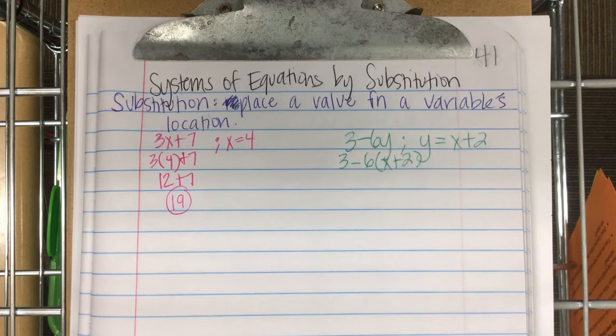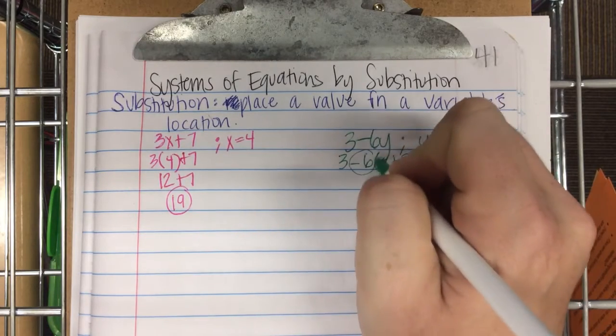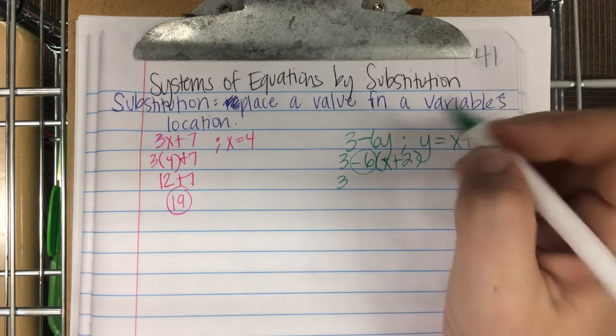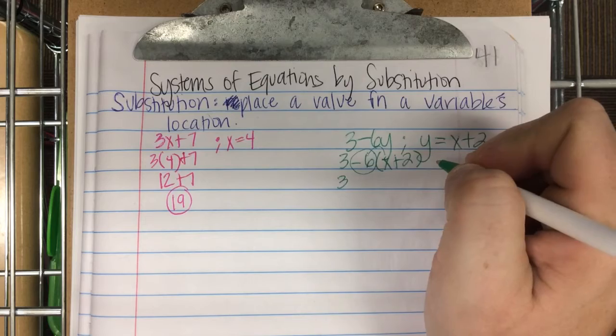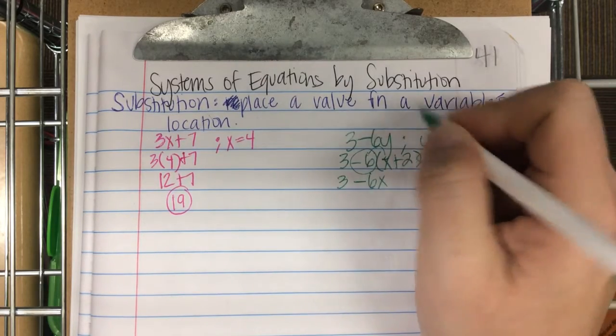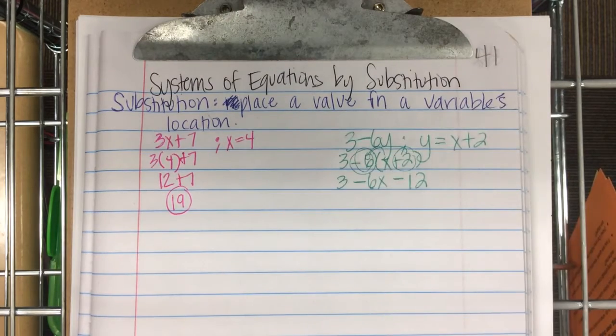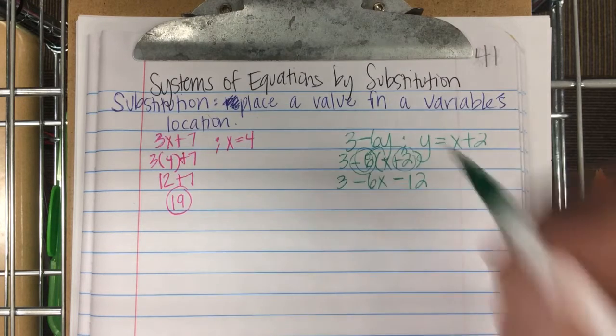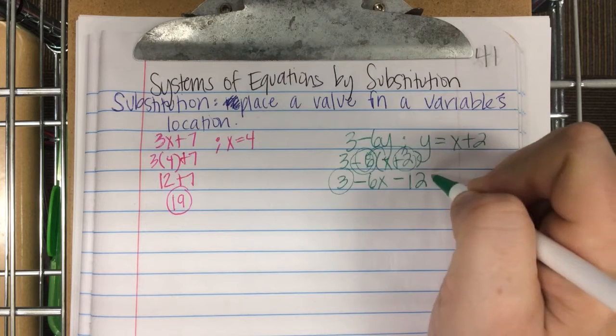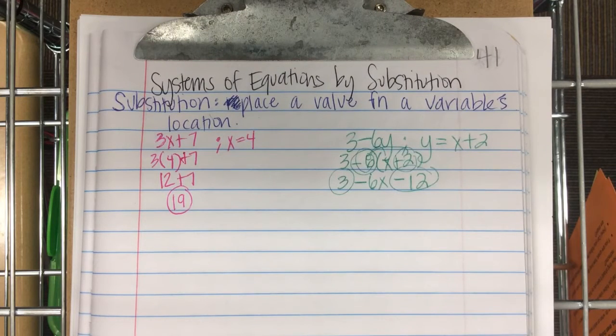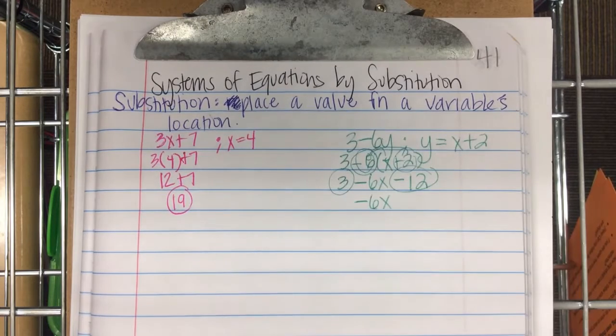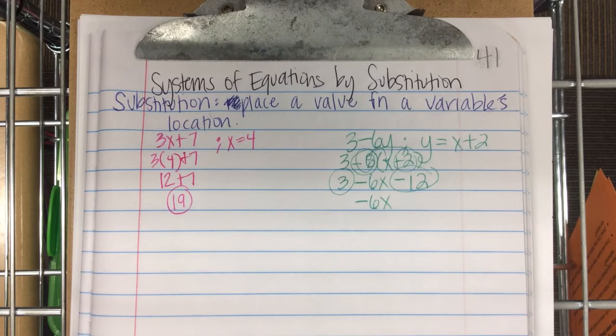When you substitute, you should substitute using parentheses. Because now, what's my next step? Distribute that negative 6. So, the 3 stays the same. Negative 6 times x is negative 6x. Negative 6 times positive 2, negative 12. Am I done now? No. What's my last step? Combine like terms. 3 and negative 12 go together. I'm going to put negative 6x first. And what's 3 minus 12? Negative 9.